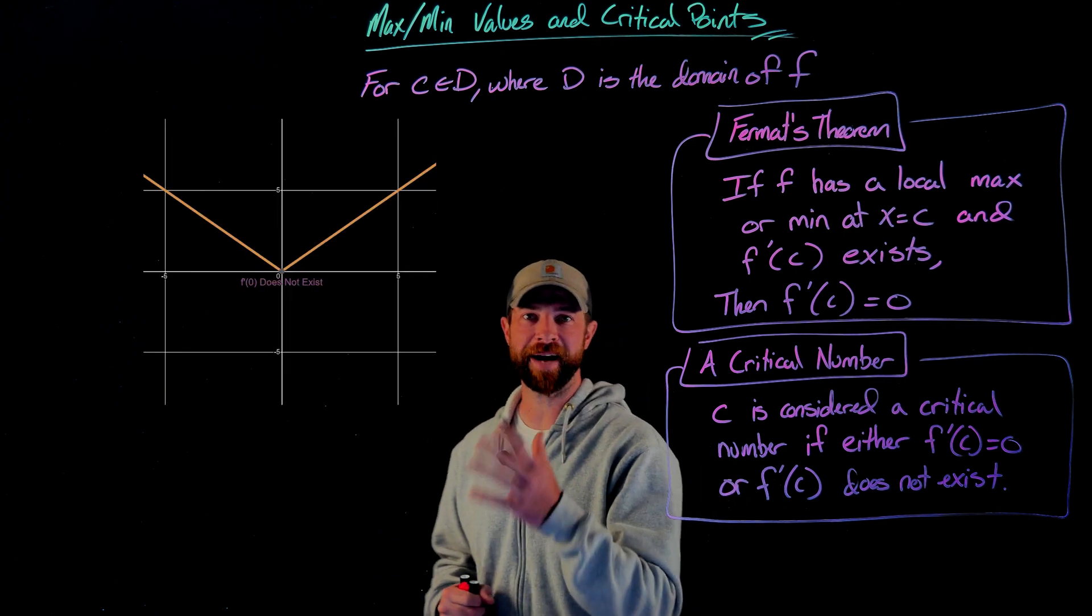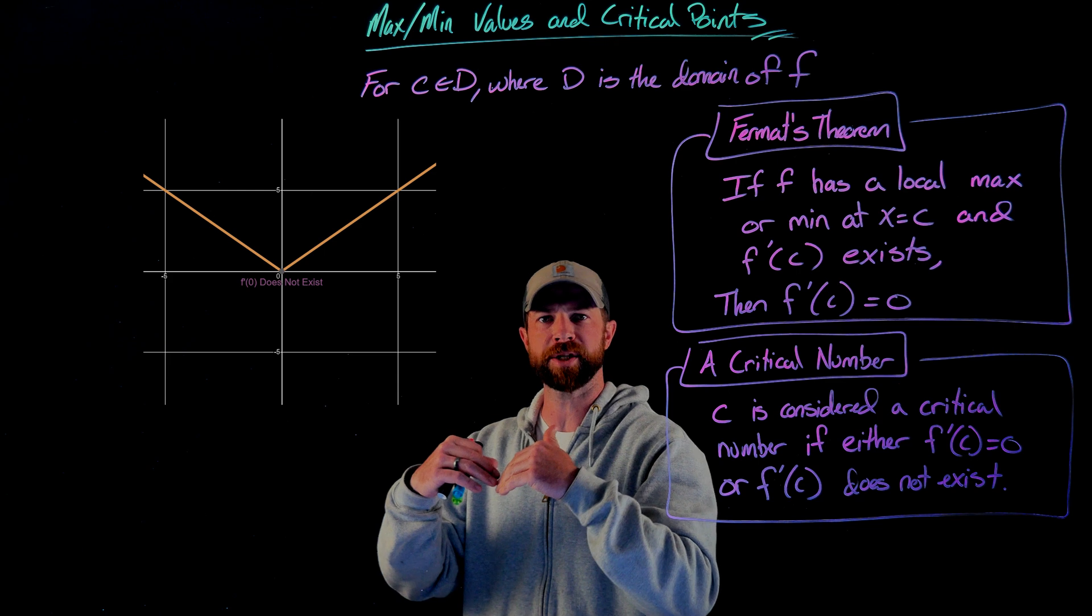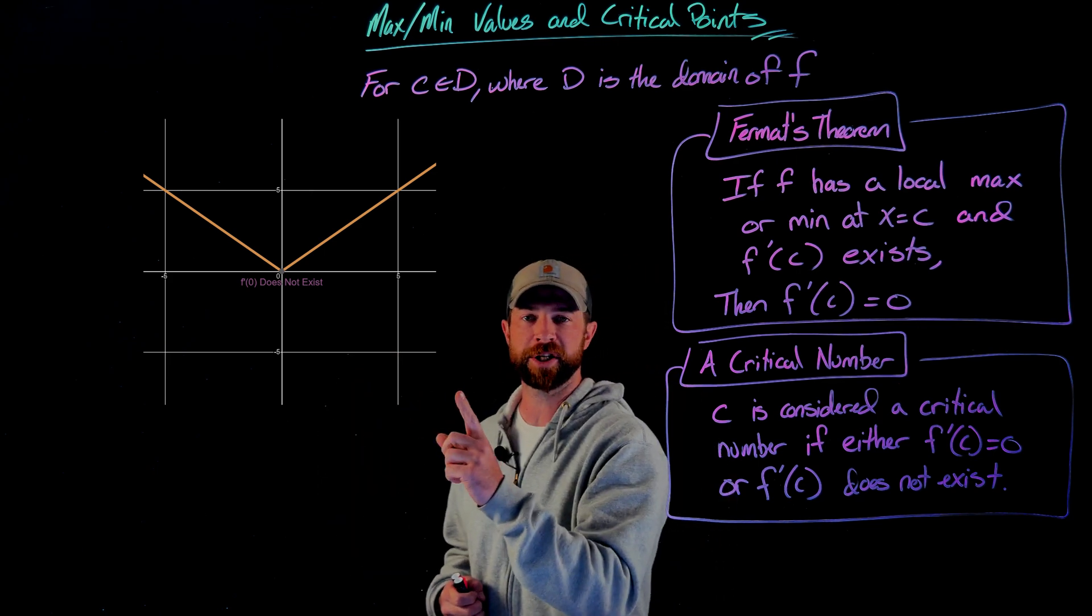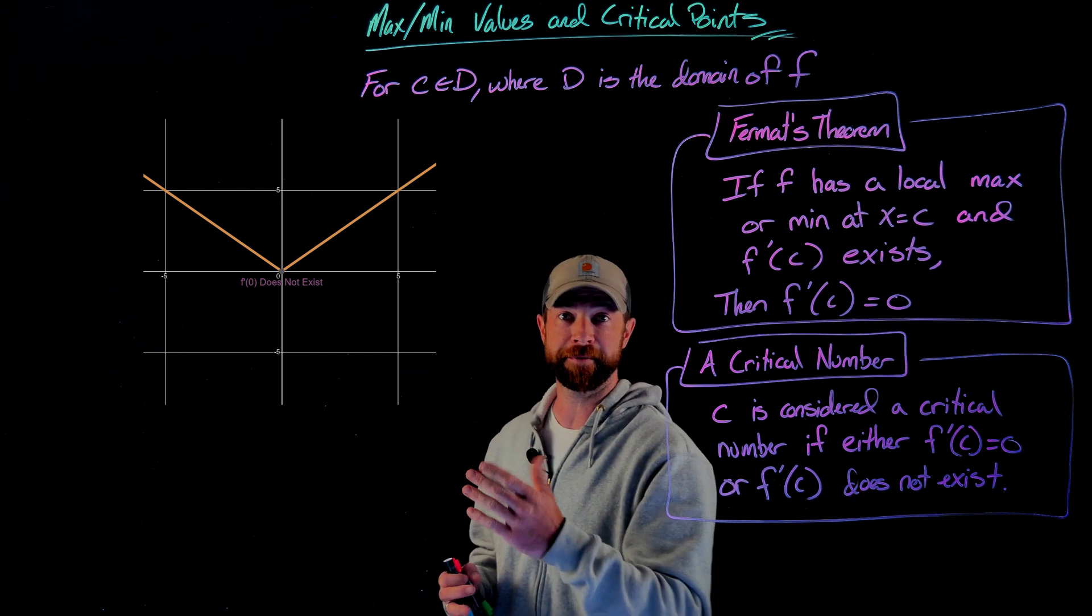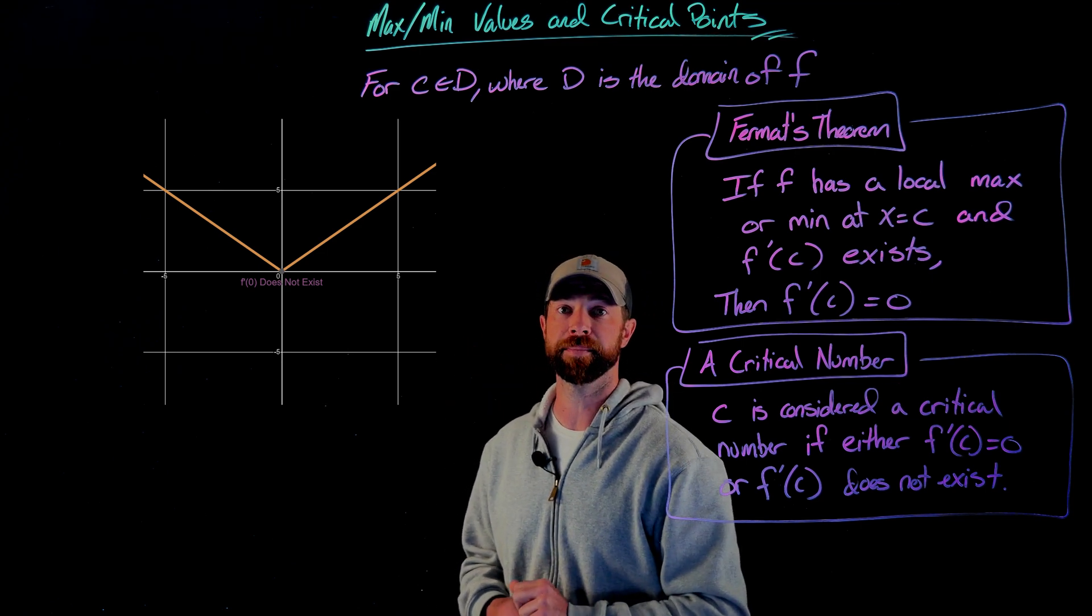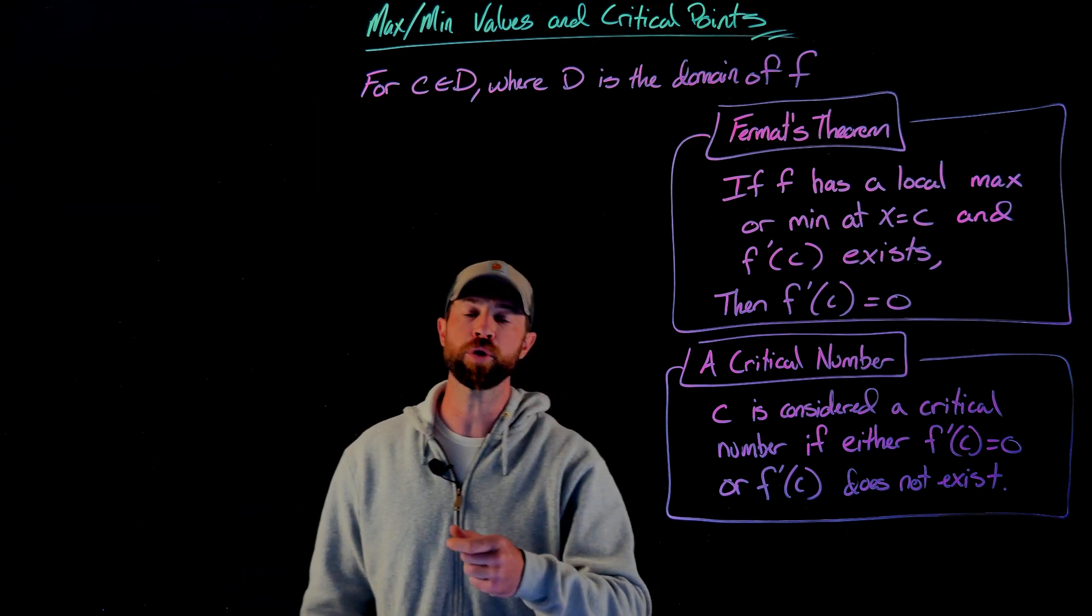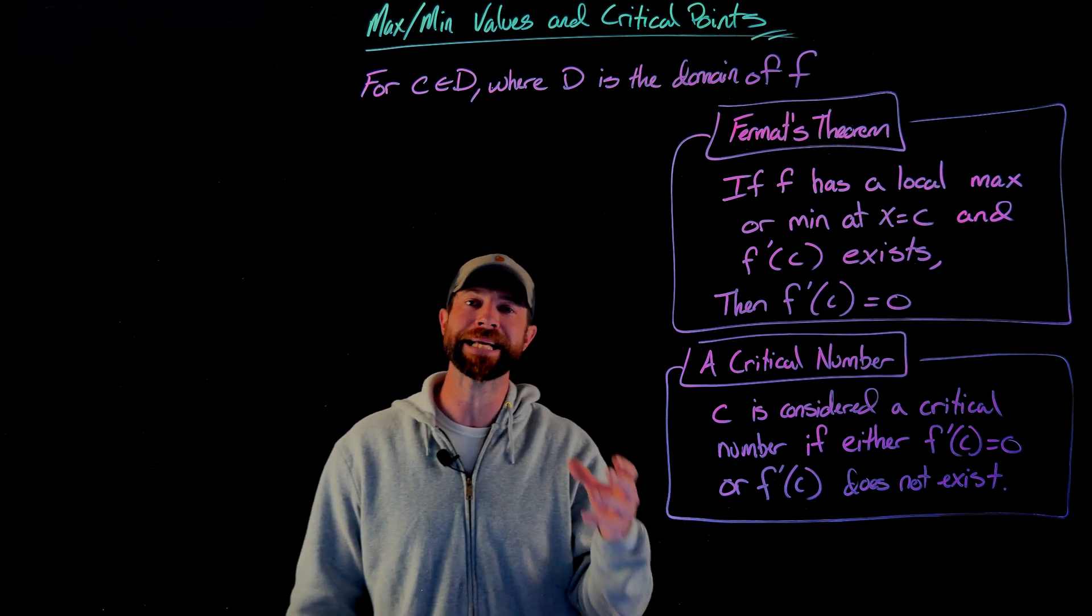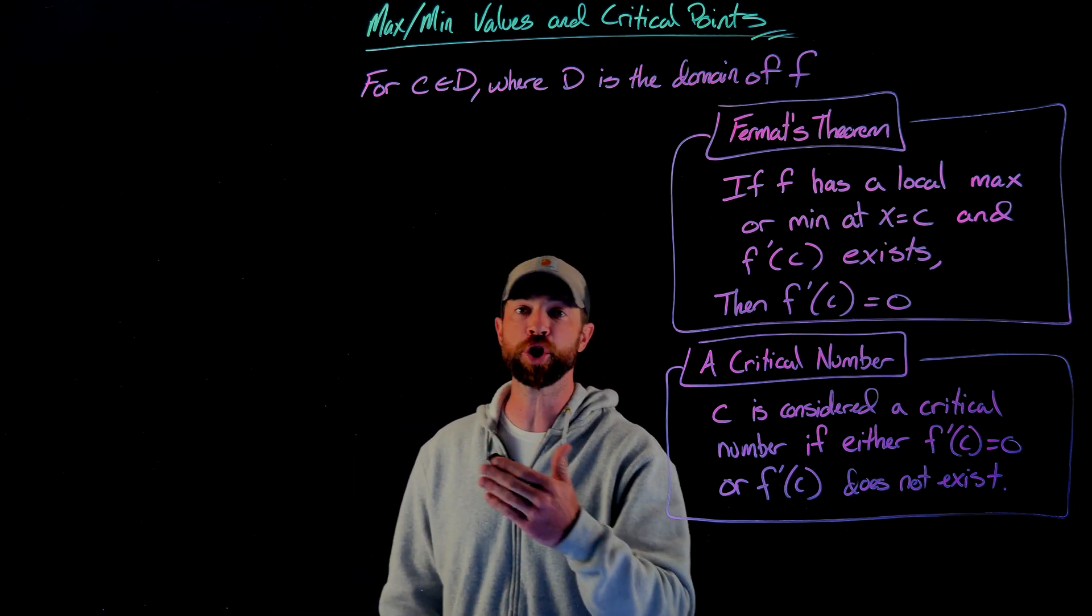And now for the absolute value of x. If we look at what's happening at x equals 0, this function is actually not differentiable. It's one of these points, right? It's not the same slope coming from the left and the right. So at x equals 0, it's not differentiable, meaning x equals 0 is a critical number for this function. It's not differentiable though at x equals 0, we do have an absolute minimum value. Again, the point being this, these ideas of critical numbers are where we're going to look for local and absolute min and max values. Though if a value is a critical number, it does not mean that a local min max or an absolute min or max occurs at that value.